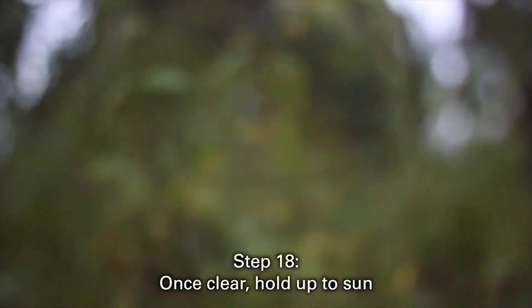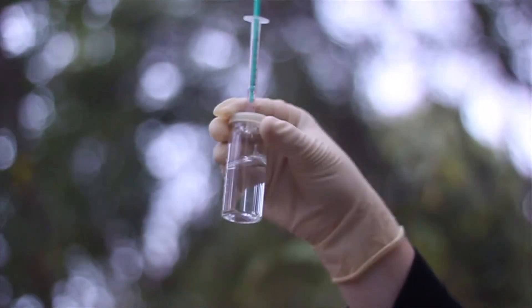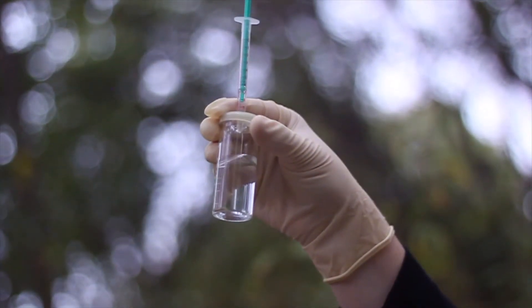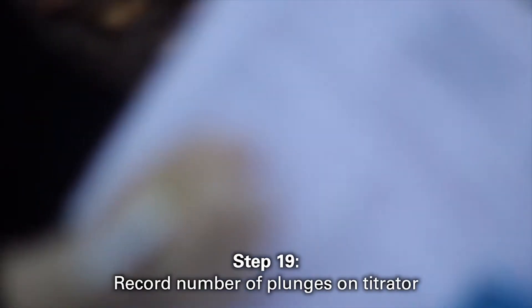Once the color has completely cleared, hold your vial up to the sun. If you notice a lavender tint, add one more drop to clear it completely. Look at your titrator and record the number you have pushed the plunger to.